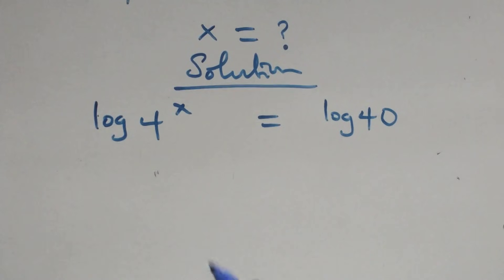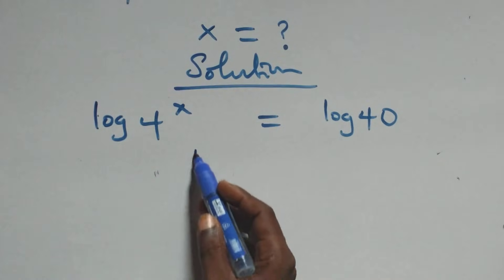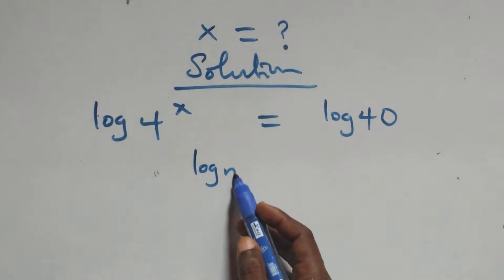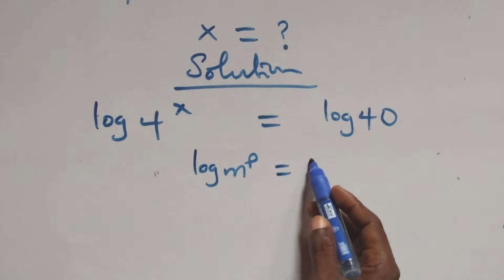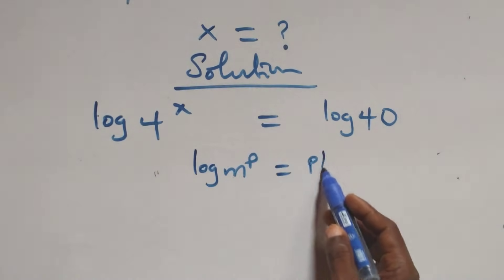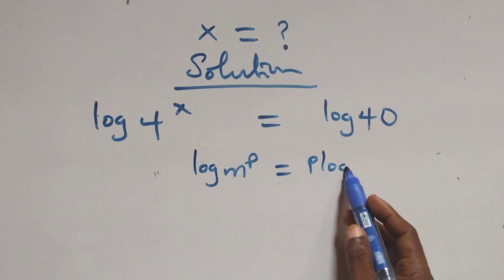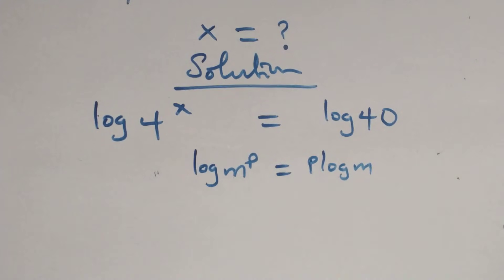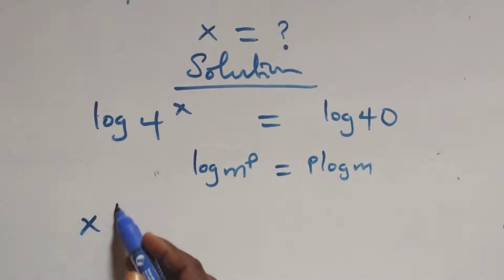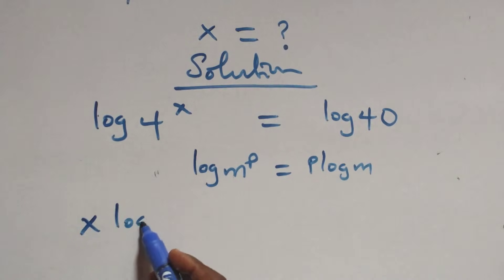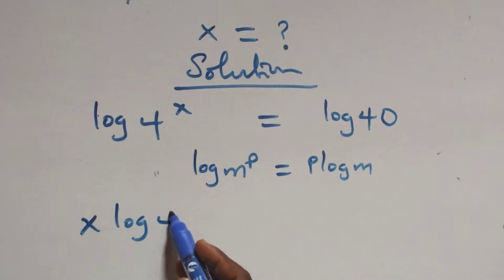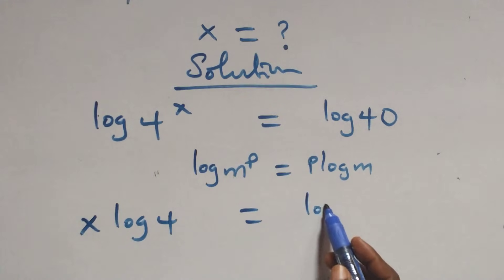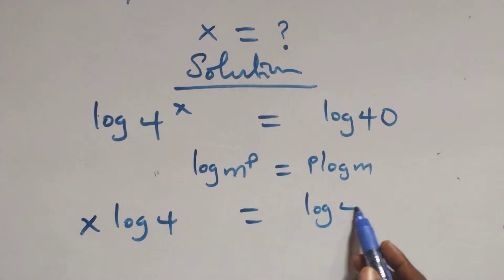Then here we apply the power of logarithm. We have log m raised to power p. This is the same thing as p log m. So here we have x log 4 equals to log 40.